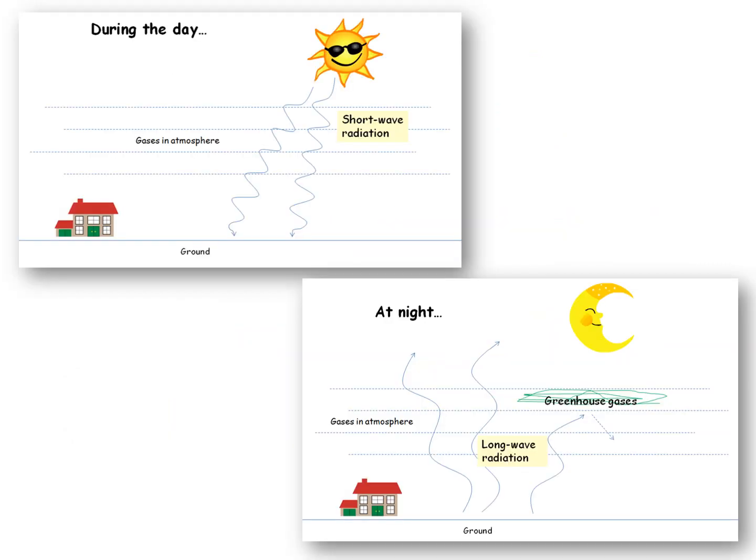Here is a summary of what's happened so far. During the day, shortwave radiation from the sun can pass through all gases in the atmosphere. But at nighttime, the longwave radiation that comes out of the Earth is trapped by certain gases called greenhouse gases.